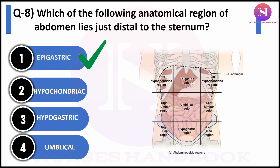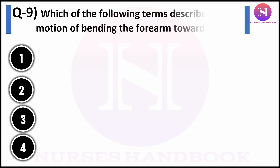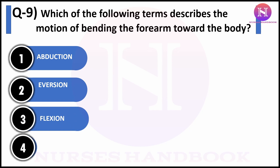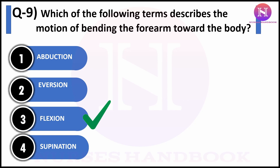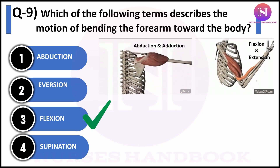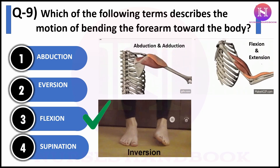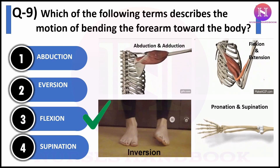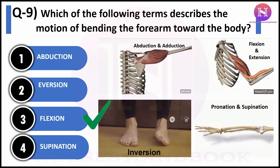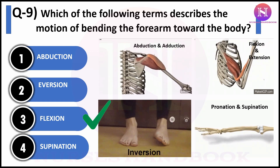The third row contains the right iliac, middle hypogastric, and left iliac regions. Question number nine: which of the following terms describes the motion of bending the forearm towards the body? Option one: abduction, option two: eversion, option three: flexion, option four: supination. The correct answer is flexion. The closing of the hinge joints is an example of flexion, as shown in the picture.